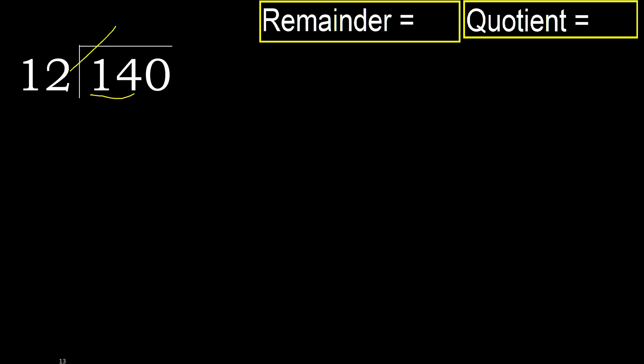12 — multiply by which number is nearest to 14 but not greater? 12 multiply by 2 is 24, which is greater. Multiply by 1 is 12, which is not greater. So 14 minus 12 equals 2.